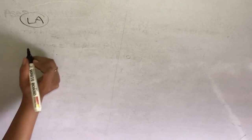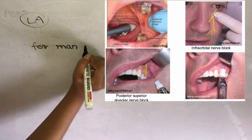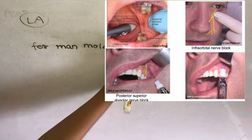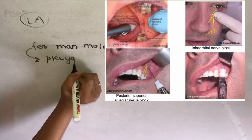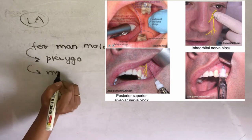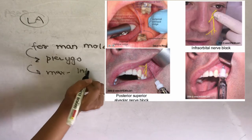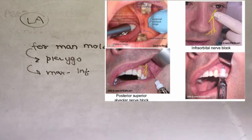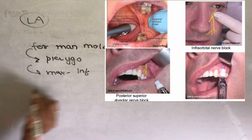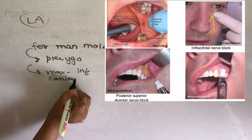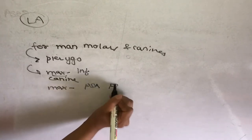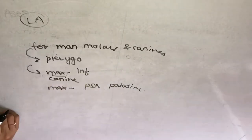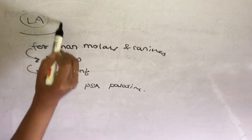Local anesthesia differs depending on which tooth is being removed. For mandibular molars and canines, use a pterygomandibular nerve block. For maxillary canines, use an infraorbital nerve block plus palatal infiltration of the incisive canal and bilateral palatal nerve block. For maxillary molars, use a posterior superior alveolar (PSA) nerve block and palatine nerve block or infiltration.